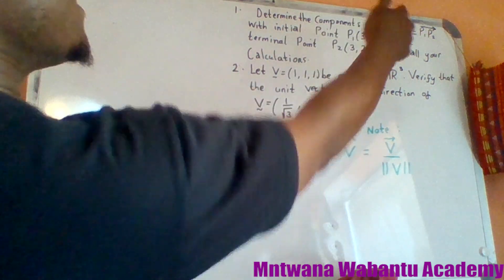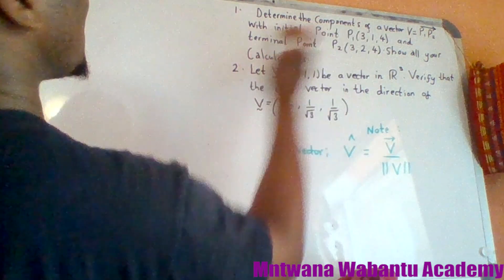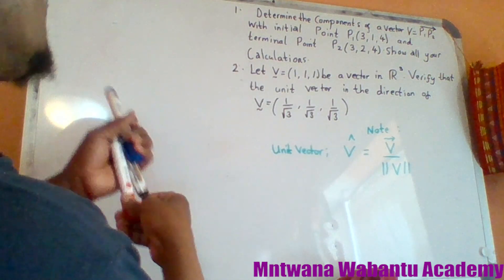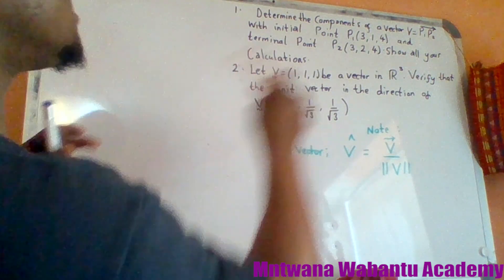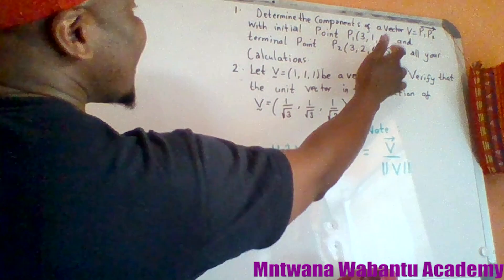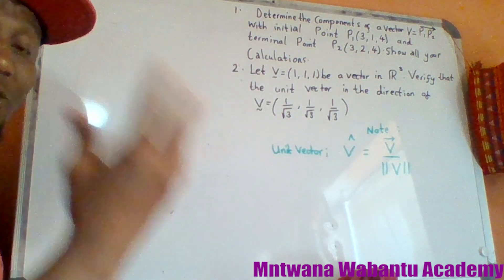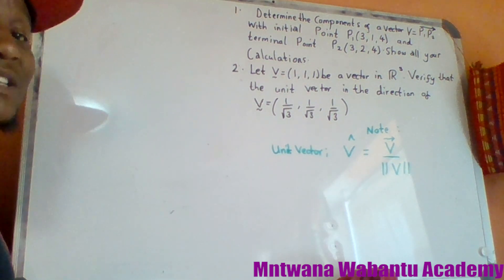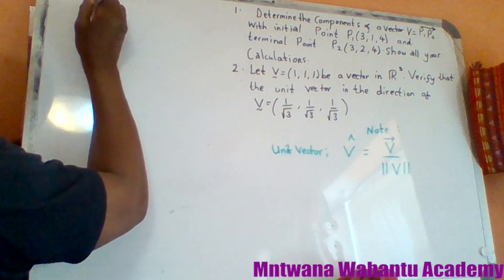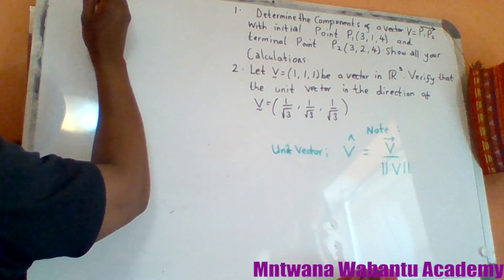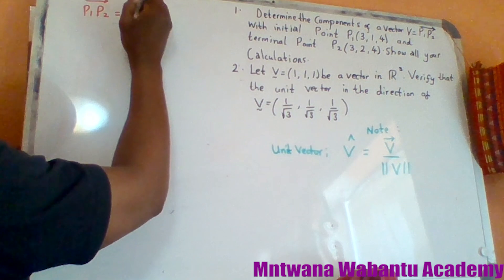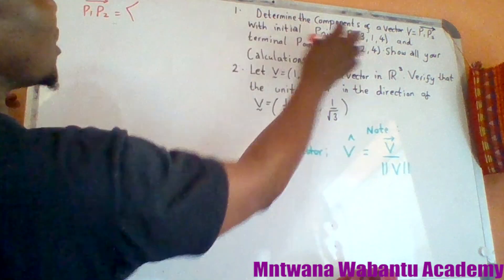Back to our question about the components of vector P1P2. Since we have three coordinates — x, y, and z — this is a vector in 3D space. To find P1P2, we always take the final point (the head of the vector) minus the initial point.